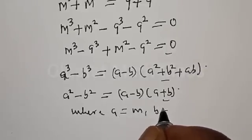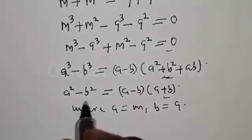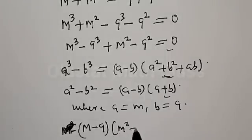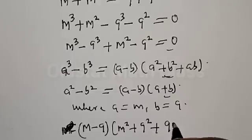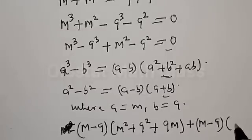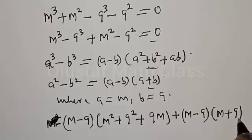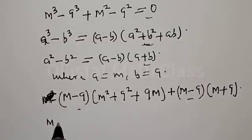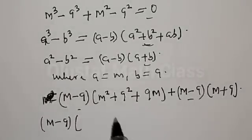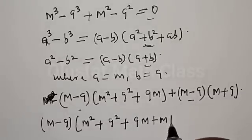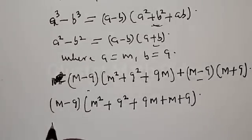Let's express the equation using this identity where a equals m and b equals 9. Therefore for m³ minus 9³ we have (m minus 9) multiplied by (m² + 9² + 9m), plus (m minus 9) multiplied by (m + 9). Now (m minus 9) is common, so let's bring it out: (m minus 9) times (m² + 9² + 9m + m + 9).